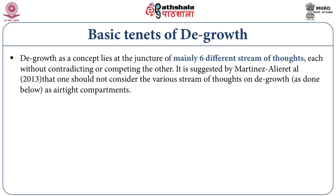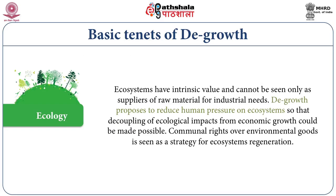Degrowth as a concept lies at the juncture of mainly six different streams of thought, each without contradicting or completing each other. It is suggested by Martinez Ellier and others that one should not consider the various streams of thought on degrowth as airtight compartments. The first stream is ecology: ecosystems have intrinsic value and cannot be seen only as suppliers of raw material for industrial needs. Degrowth proposes to reduce human pressure on ecosystems so that decoupling of ecological impacts from economic growth could be made possible. Communal rights over environmental goods is seen as a strategy for ecosystem regeneration.